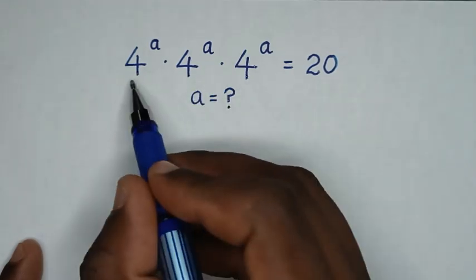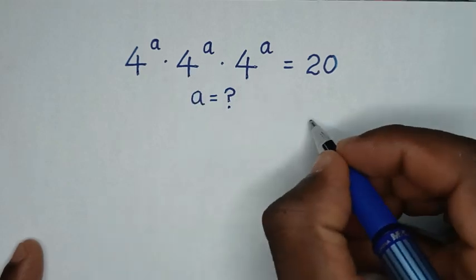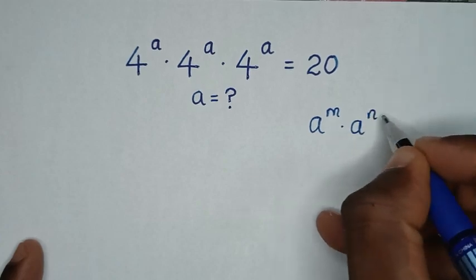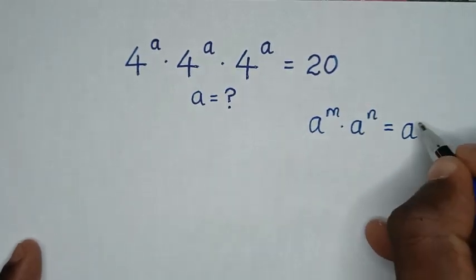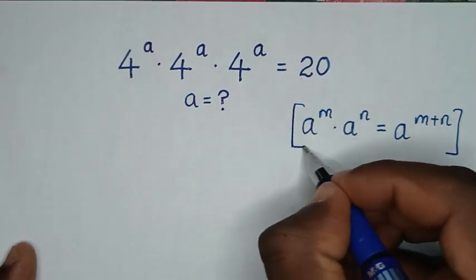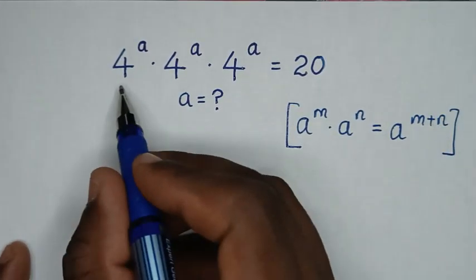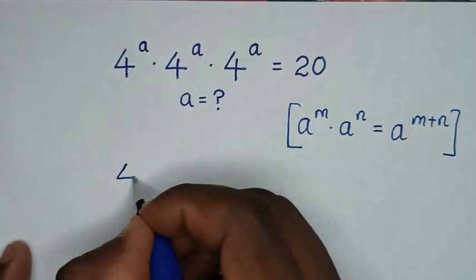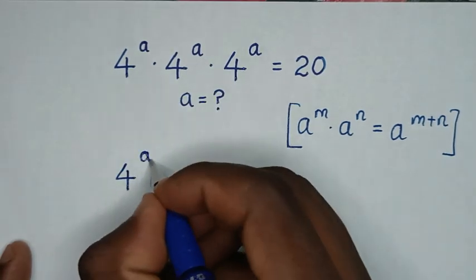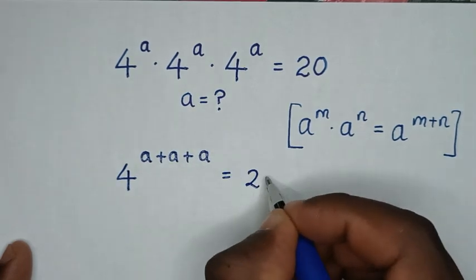In the first step, from the left side, 4 power of a times 4 power of a times 4 power of a is in the form of a power of m times a power of n equals a power of m plus n. Applying this rule, we get the same base of 4, with power a plus a plus a equal to 20.